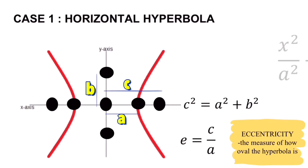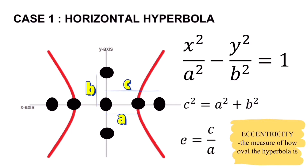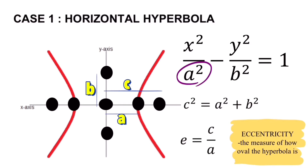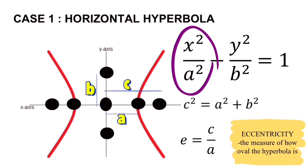The standard formula for a horizontal hyperbola is x squared over a squared minus y squared over b squared equals one. Since a is on the horizontal axis, it is placed under the x squared, and since the vertex is on the horizontal axis, the x squared over a squared term is positive.